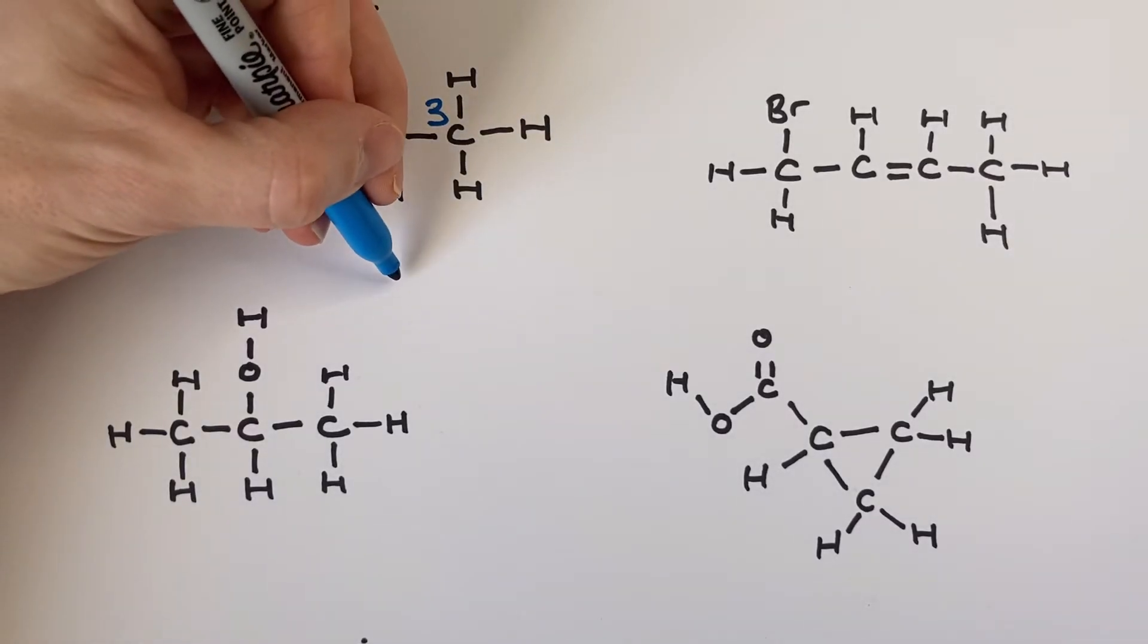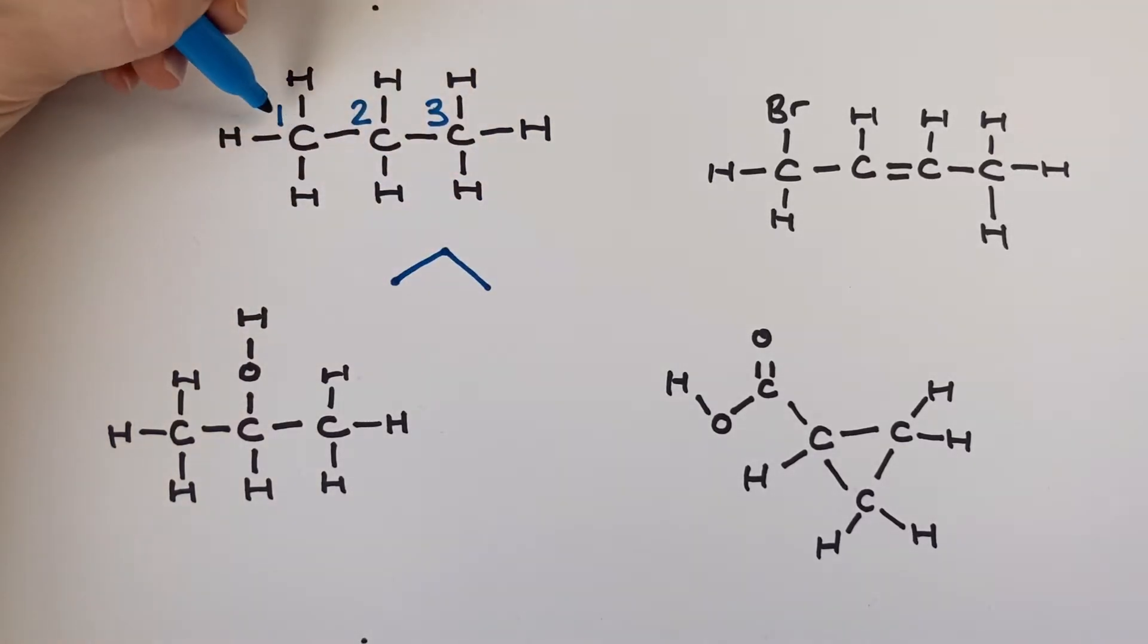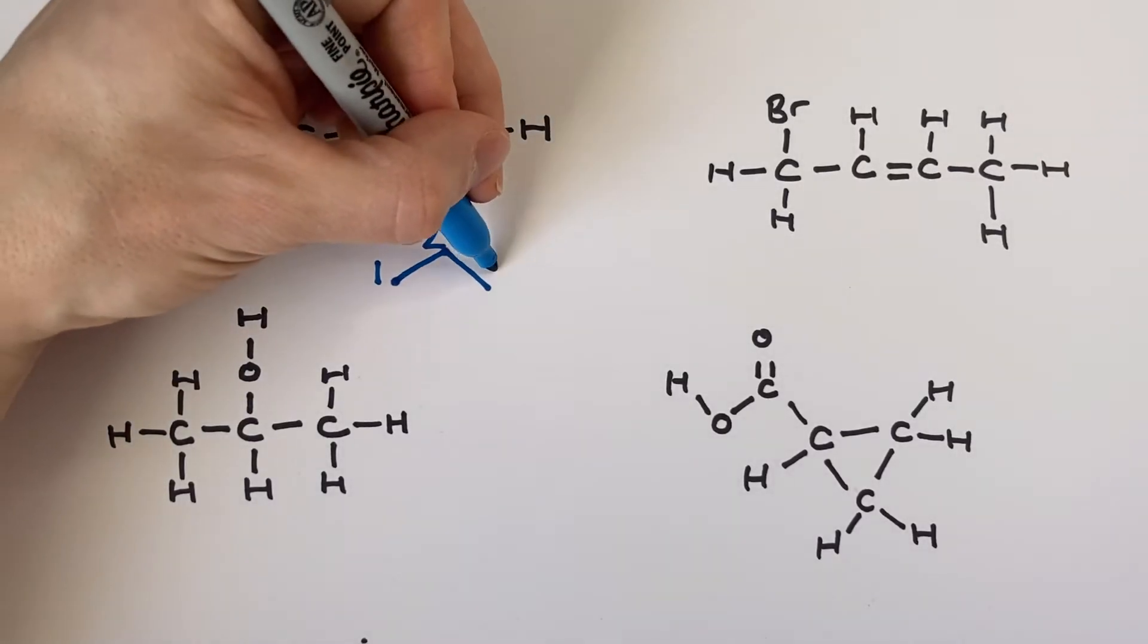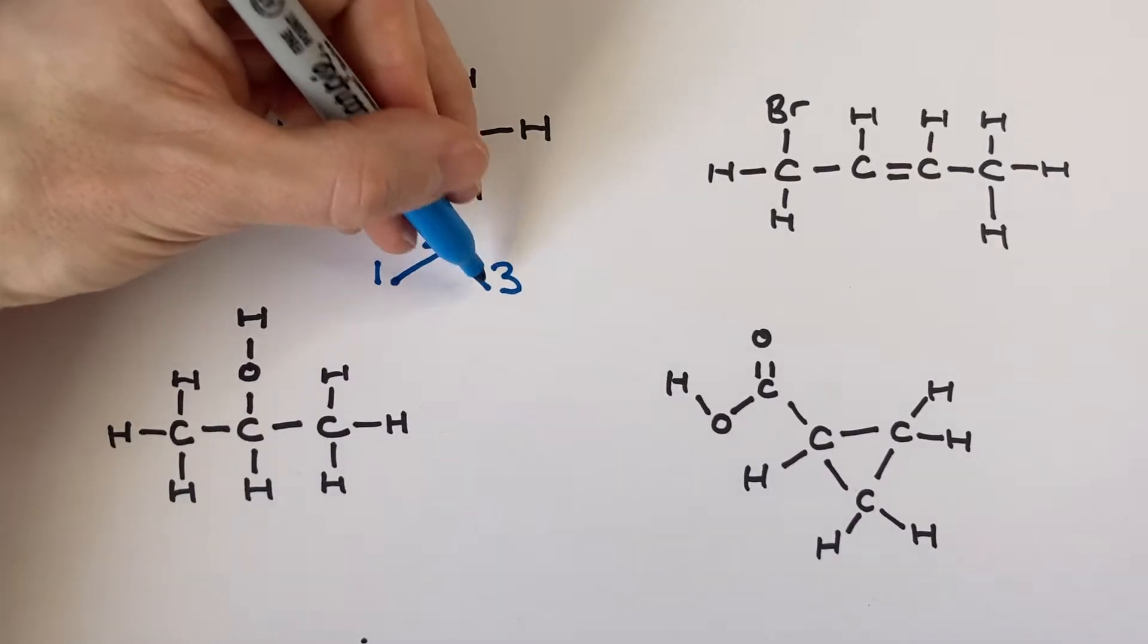So for the skeletal structure pen hits the page that's the first carbon up to the second down to the third. So that's every end of every line and every corner in the line that I draw represents a carbon atom. That's one two three just there like that.